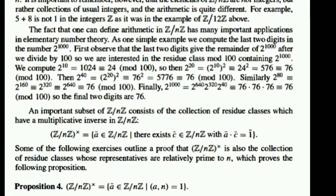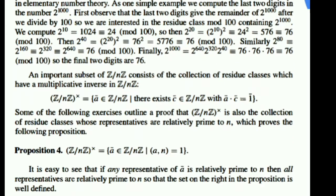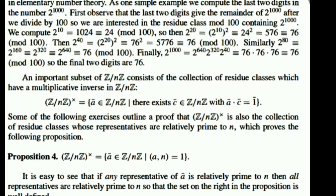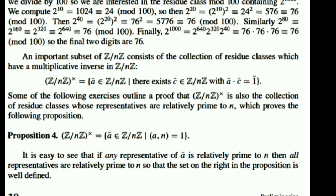Now another important fact is that defining arithmetic on Z/nZ has important applications. For example, if we want to find the last two digits of 2 to the power 1000, we can find this with modular arithmetic. Basically, whenever we are trying to find the last two digits of 2 to the power 1000, we will find the value mod 100.